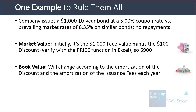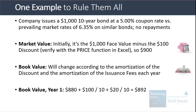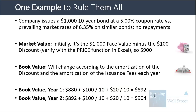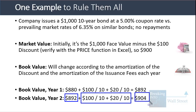The book value changes each year based on amortization of the discount and amortization of the issuance fees. After year one: starting from $880, we add back the $100 discount divided by 10 years ($10) and the $20 issuance fee divided by 10 years ($2), getting to $892. For year two, starting from $892 and adding the same amounts, we reach $904. So the book value increases by $12 per year until the bond matures.